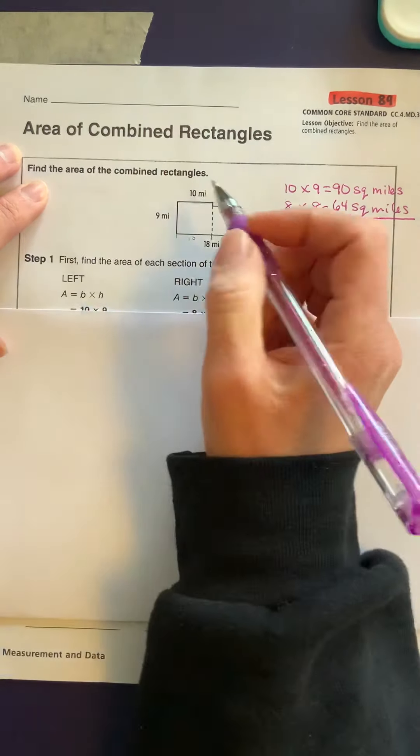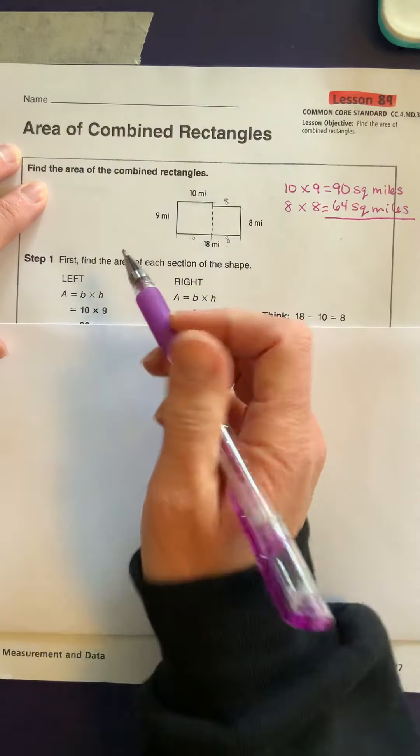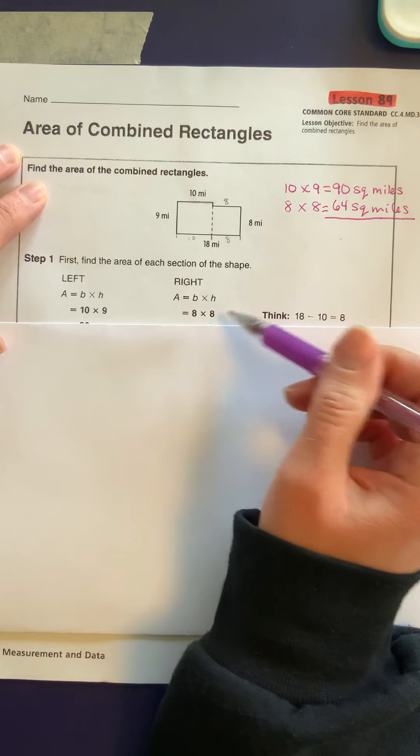Find the area of each shape. So on the left we have B times H. Area equals B times H. So 10 times 9. On the right, the base, sorry, base times height, 8 times 8.